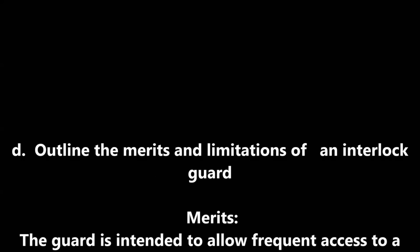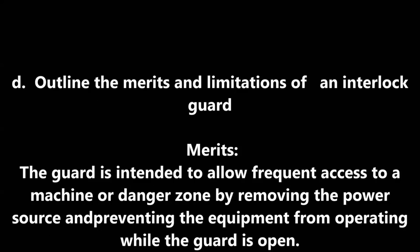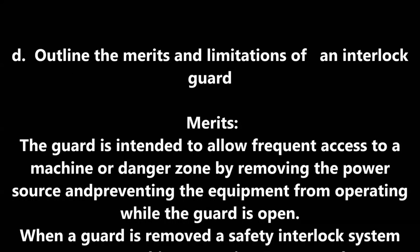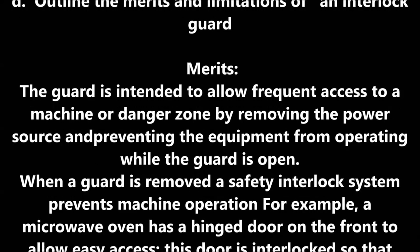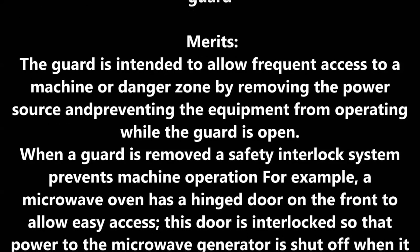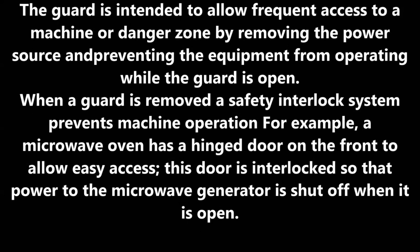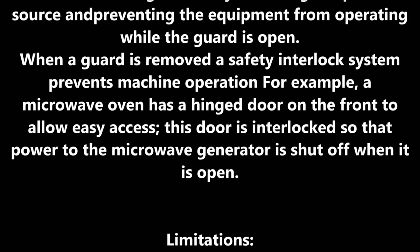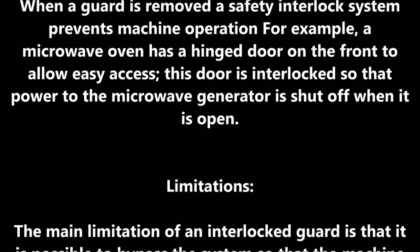Outline the merits and limitations of an interlock guard. Merits: The guard is intended to allow frequent access to a machine or danger zone by removing the power source and preventing the equipment from operating while the guard is open. When a guard is removed, a safety interlock system prevents machine operation. For example, a microwave oven has a hinged door on the front to allow easy access, and this door is interlocked so that power to the microwave generator is shut off when it is open.